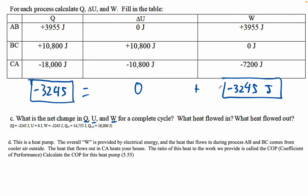What heat flowed in? Well, this is heat that flowed in here. So the net heat that flowed in... Heat that flowed out is 18,000. But the heat that flowed in is 3955 plus 10,800. This is the positive heats. That's heat flowing in.